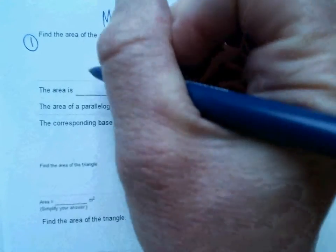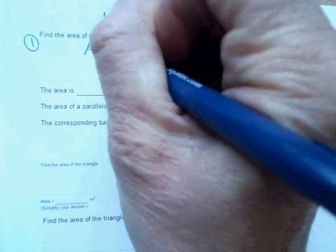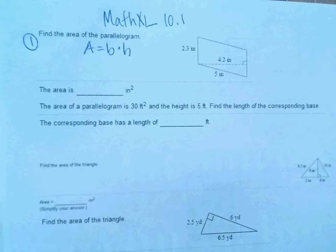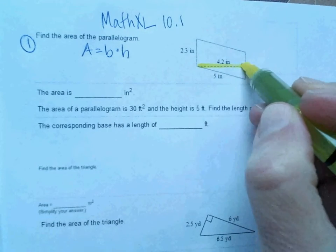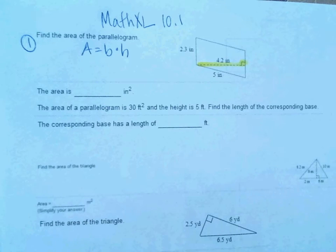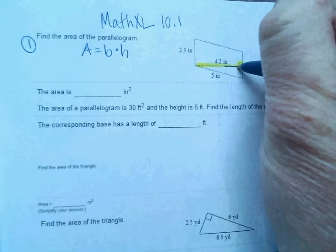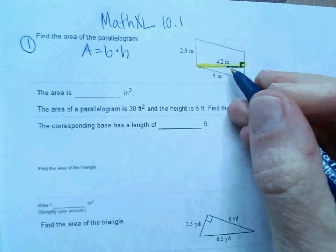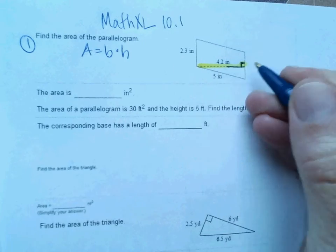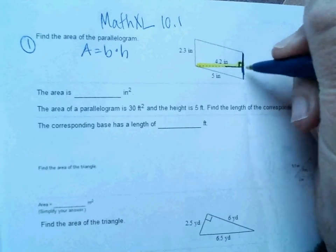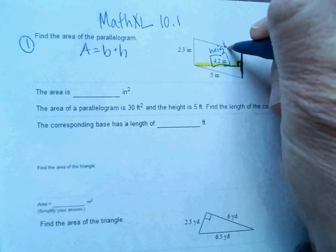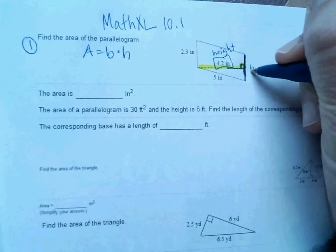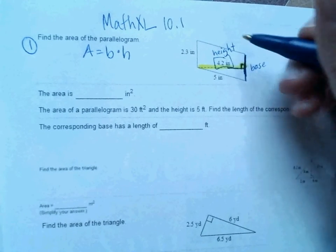We just said A is equal to base times height. So we've got to find a base and we've got to find a height. Well, if you look at your picture, your height always makes an H. So this one we're going to use as the height because there's the long skinny H there. And whatever side that hits is considered your base. So 4.2 is your height. And then this side is the base.